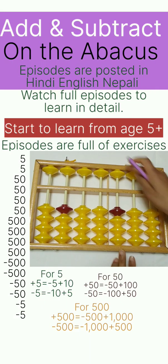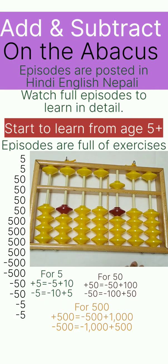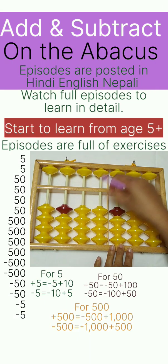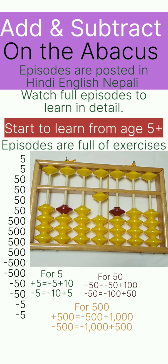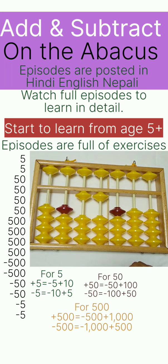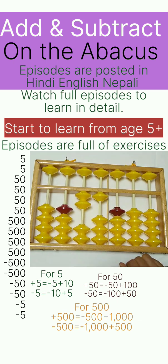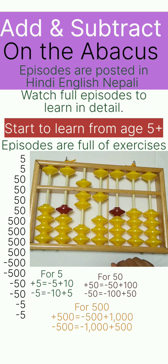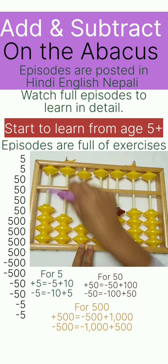Add 5, this one another 5, reduce 5, borrow 10. 50, this one another 50, reduce 50, borrow 100. One more time: 50, this one another 50, reduce 50, borrow 100. 500, this one another 500, first reduce 500.